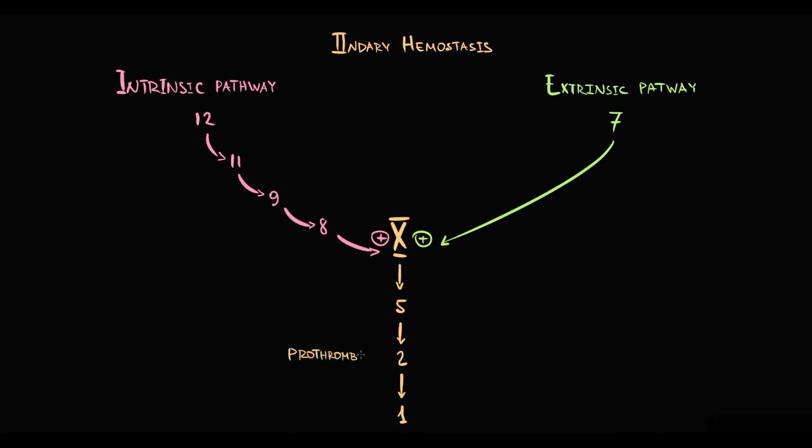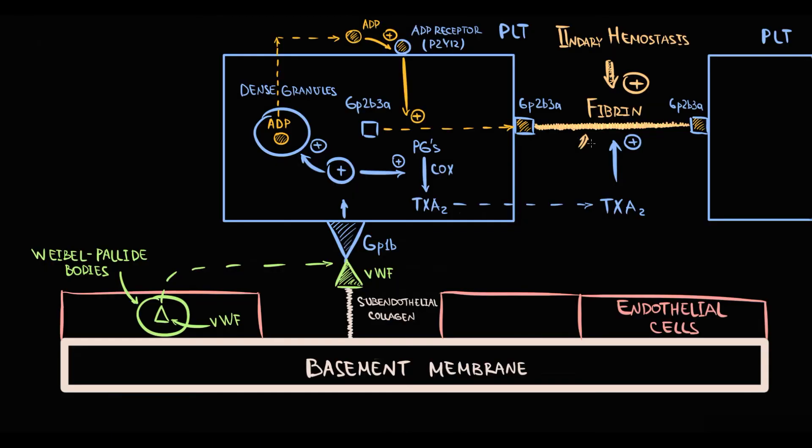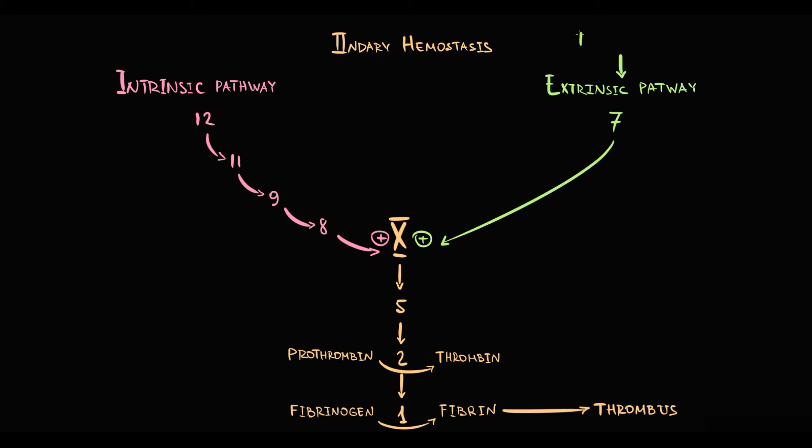Factor 2 called prothrombin that with activation becomes thrombin. And factor 1 called fibrinogen that with activation becomes fibrin. And exactly fibrin makes from platelet plug a formidable thrombus. So secondary hemostasis converts platelet plug into a thrombus. To assess the extrinsic pathway, we use prothrombin time and international normalized ratio. For assessment of intrinsic pathway, we use partial thromboplastin time.